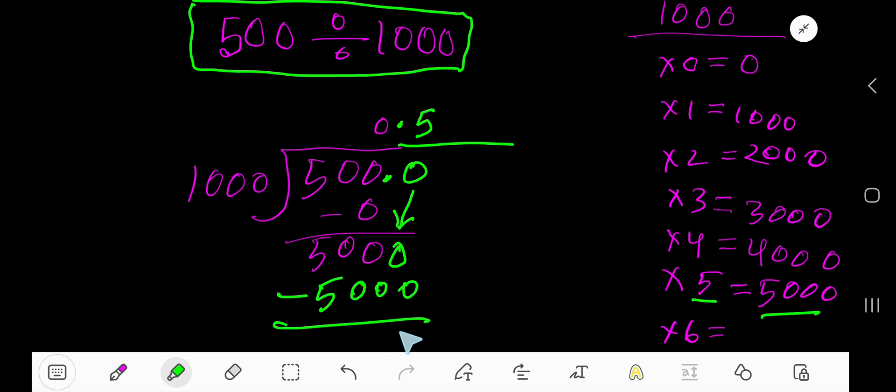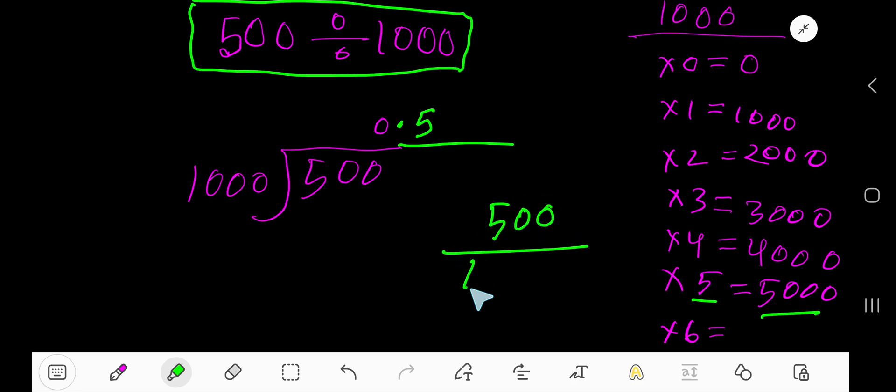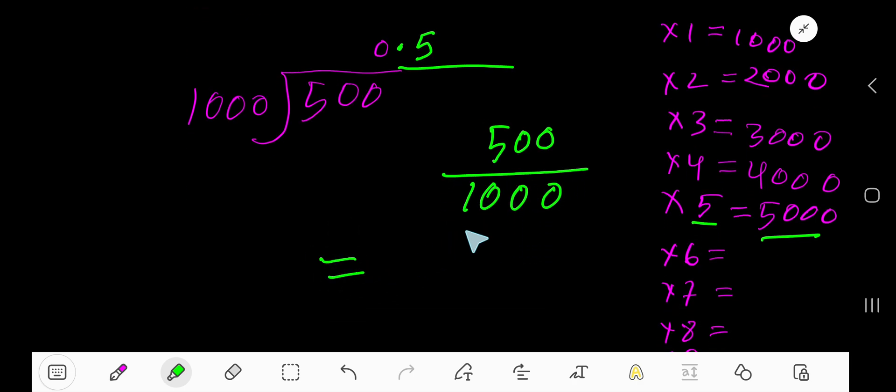Let me show you another method to get the answer. Here 500 and then 1000. If you get a fraction where the denominator is like 10, 100, 1000, 10000, that is after 1 you have just zeros.